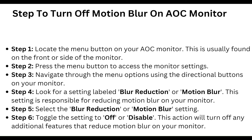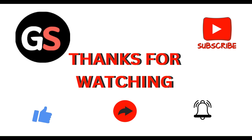Select the 'Blur Reduction' or 'Motion Blur' setting and toggle the setting off or disable it. This will turn off any additional features that reduce motion blur on your monitor. So these are the steps you have to follow to turn off motion blur on your AOC monitor. Thanks guys, have a nice day — don't forget to subscribe to our YouTube channel.